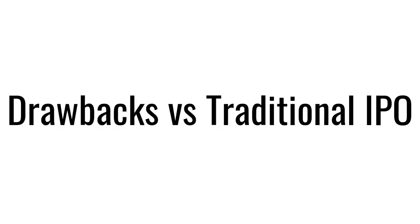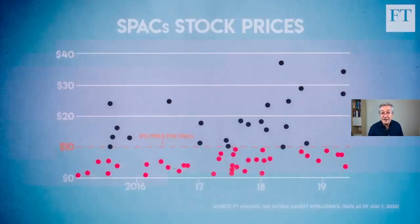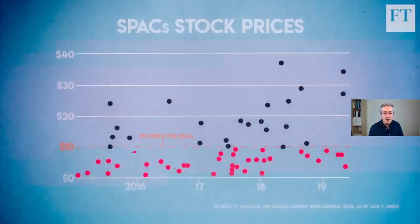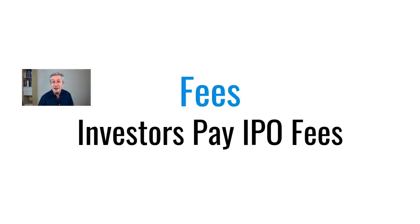Now let's consider the drawbacks versus a traditional IPO. FT data on stock prices following SPAC mergers shows many deals in red — companies trading below that initial $10. While some deals have been very successful, that certainly isn't always the case. And while the target company benefits from avoiding IPO fees, that's obviously a drawback to SPAC investors, who effectively stumped up the IPO fees in the first place.